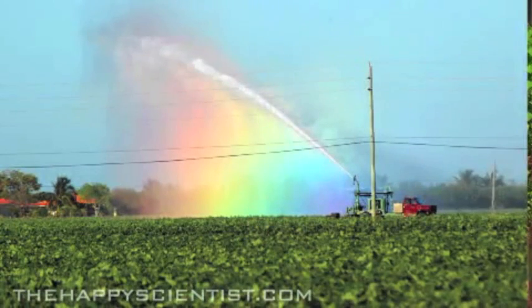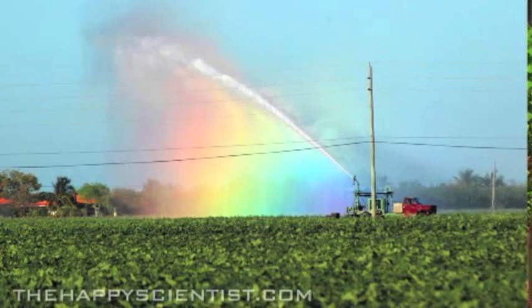Think about a rainbow. When you look at a rainbow, you see the colors red, orange, yellow, green, blue, indigo, violet, all that nice spectrum.